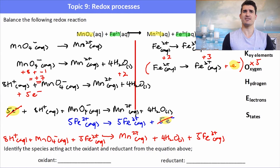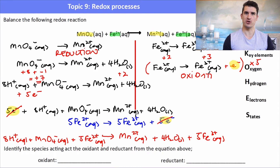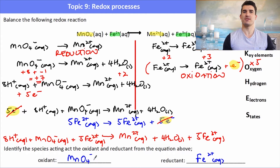If we need to identify the species acting as the oxidant and the reductant, we look for which species undergoes reduction and which undergoes oxidation. There's a useful saying: if you're murdered, you can't be the murderer. MnO4- undergoes reduction, so it must be the oxidant. Fe2+ undergoes oxidation, so it must be the reductant. Remember to include the charge and the state when identifying the species.